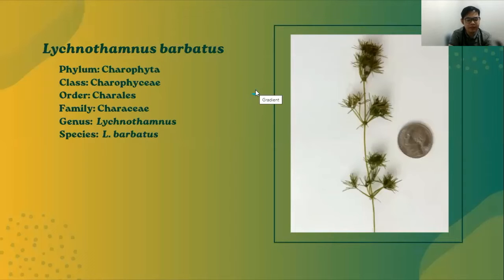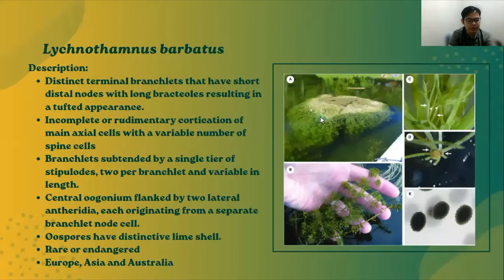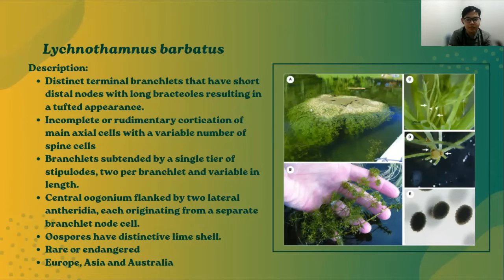Next we have Lychnothamnus barbatus from the family Characeae. Lychnothamnus barbatus possesses diagnostic morphological characteristics distinguishing it from Chara and Lamprothamium. It has distinct terminal branchlets that have short distal nodes with long brachia, resulting in a tufted appearance. The main axial cells have cortication that is often incomplete or rudimentary, with a variable number of spine cells. Branchlets are subtended by a single tier of stipulodes, two per branchlet, and variable in length. The central oogonium is flanked by two lateral antheridia, each originating from a separate branchlet node cell. The oospores have a distinctive lime shell. It is considered rare or endangered and in decline throughout its scattered range in Europe, Asia, and Australia.